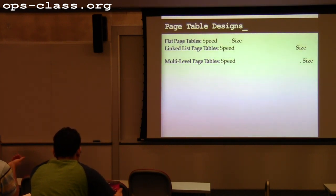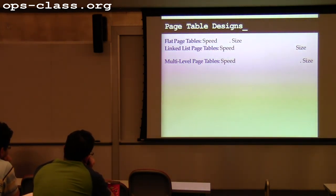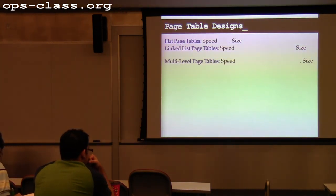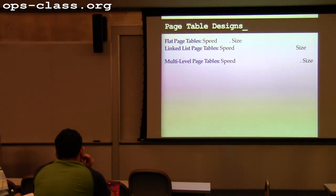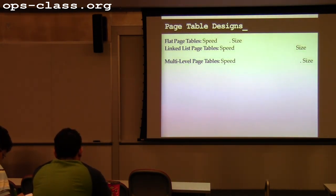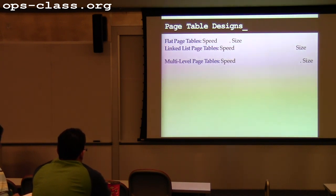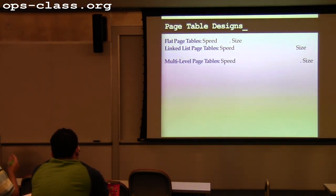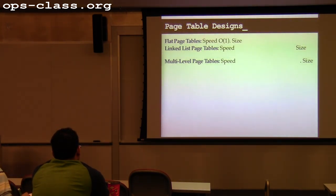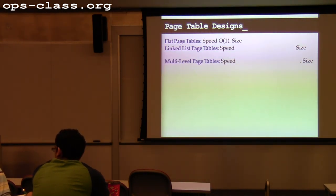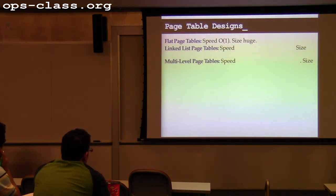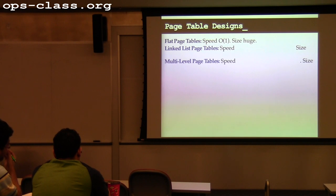We've talked about three different ways to set up page tables. First, the flat page table — one big array for the entire address space. Lookup speed is O(1): just convert the virtual page number directly into an array index. But the size is O(address space size divided by page size) — essentially O(huge) — so we're not going to implement that.